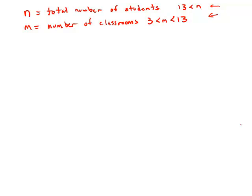What's true of the number of students, which is greater than 13, and the number of classrooms has to be between 3 and 13. We want to know is it possible to assign each of the n students to one of the m classrooms so that each classroom has the same number of students assigned to it.